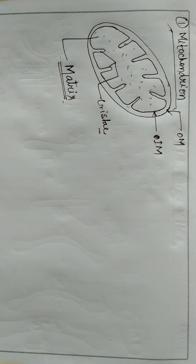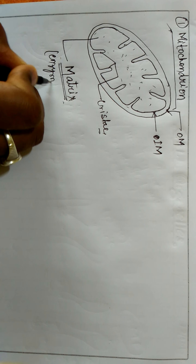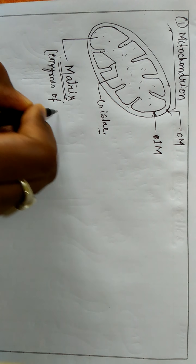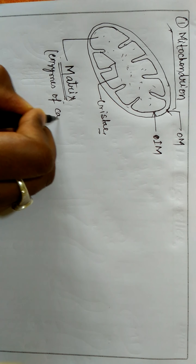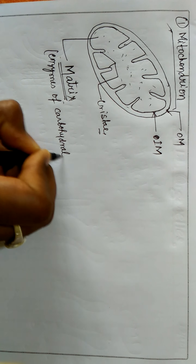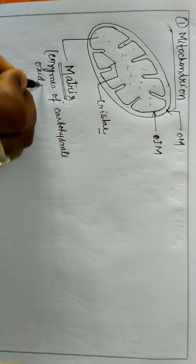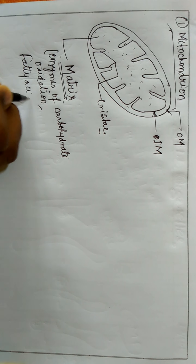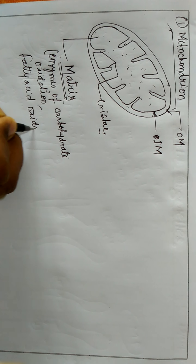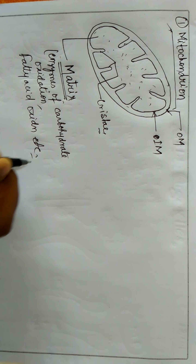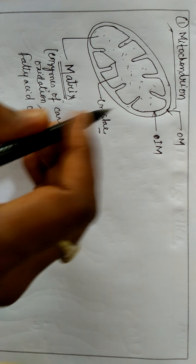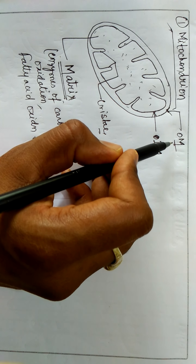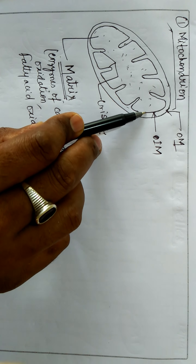Inside this fluid, enzymes of carbohydrate oxidation and fatty acid oxidation are present. This outer membrane is permeable for water, but the inner membrane is selectively permeable.